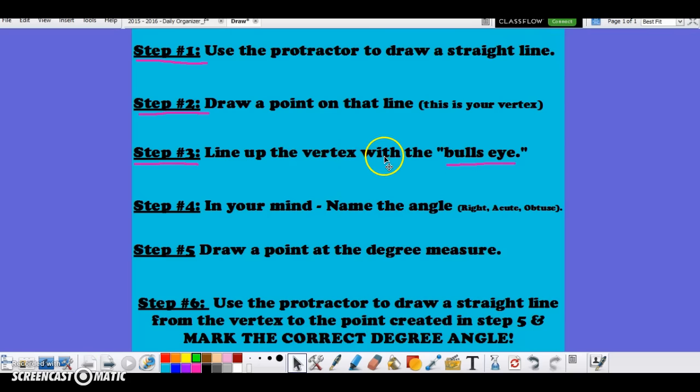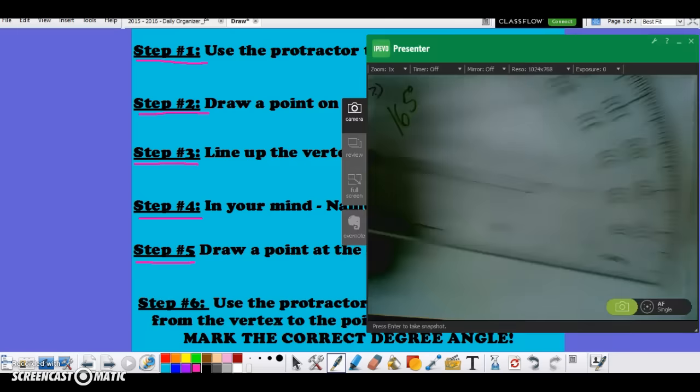So we'll line up the vertex with that bullseye. Step 4 is in our mind once again we're going to name this angle. Are we drawing an acute, right, or an obtuse angle? Then we'll write that down. Step 5 is drawing a point at the degree measure at the top, not inside but at the top of our protractor. Let me show you that real quick before we start the example.